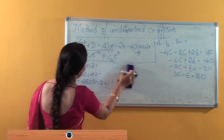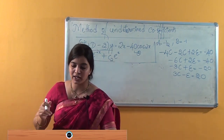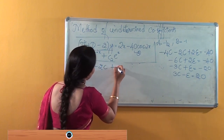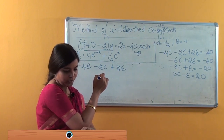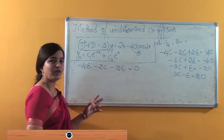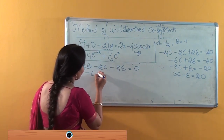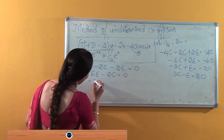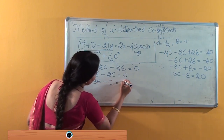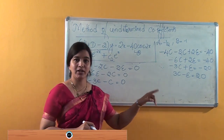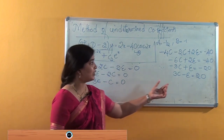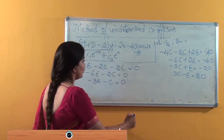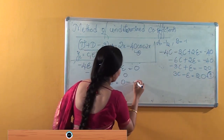Next, we compare the coefficients of sin 2x. When we do that, we obtain: minus 4E minus 2C plus 2C minus 2E equals 0, which simplifies to minus 6E minus 2C equals 0. Dividing throughout by 2 gives minus 3E minus C equals 0. We now have two unknowns and two equations: equation one is 3C minus E equals 20, and equation two is minus 3E minus C equals 0.